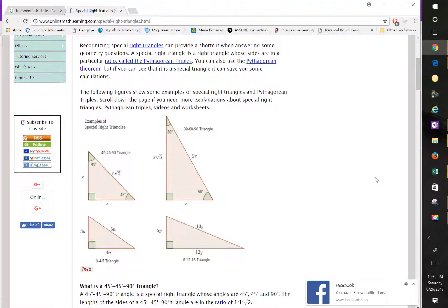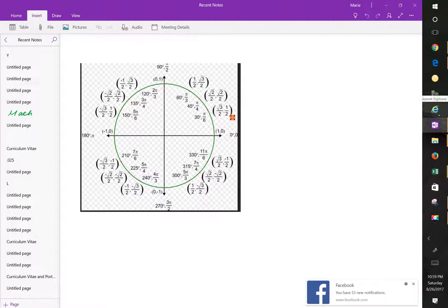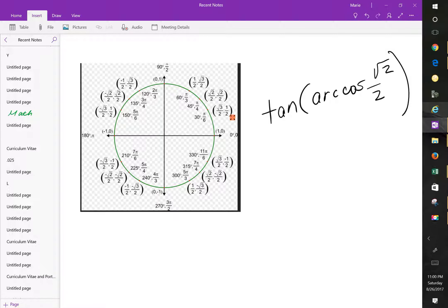Alright, so I'm answering this question. The actual question posed to me is basically to find the tan of arc cosine, and then you're given square root of 2 over 2 and you're trying to find the solution. I'm going to bring you back to some basics here. We're looking for the tan of arc cosine of square root of 2 over 2.